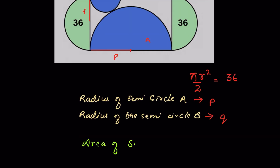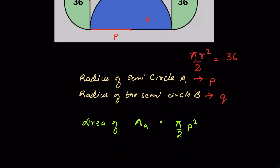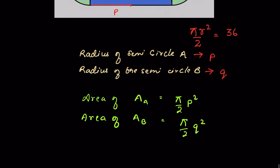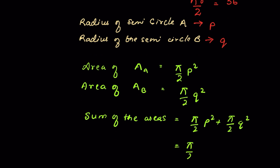Area of semi-circle A will be Pi upon 2 times P squared, and area of semi-circle B will be Pi upon 2 times Q squared. The sum of the areas equals Pi upon 2 times P squared plus Pi upon 2 times Q squared. We can take Pi upon 2 common and write Pi upon 2 times (P squared plus Q squared). So this will be the sum of the areas.